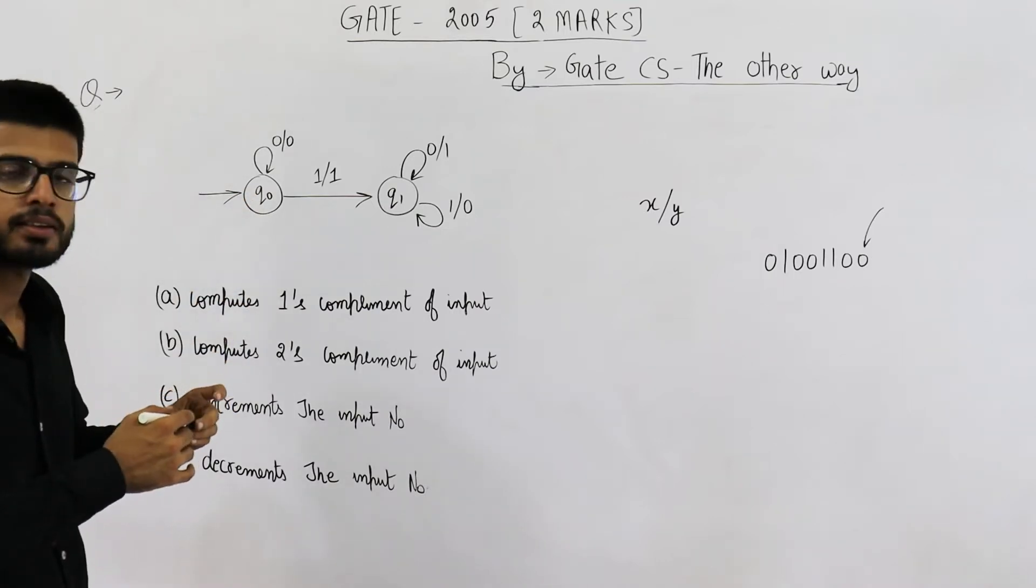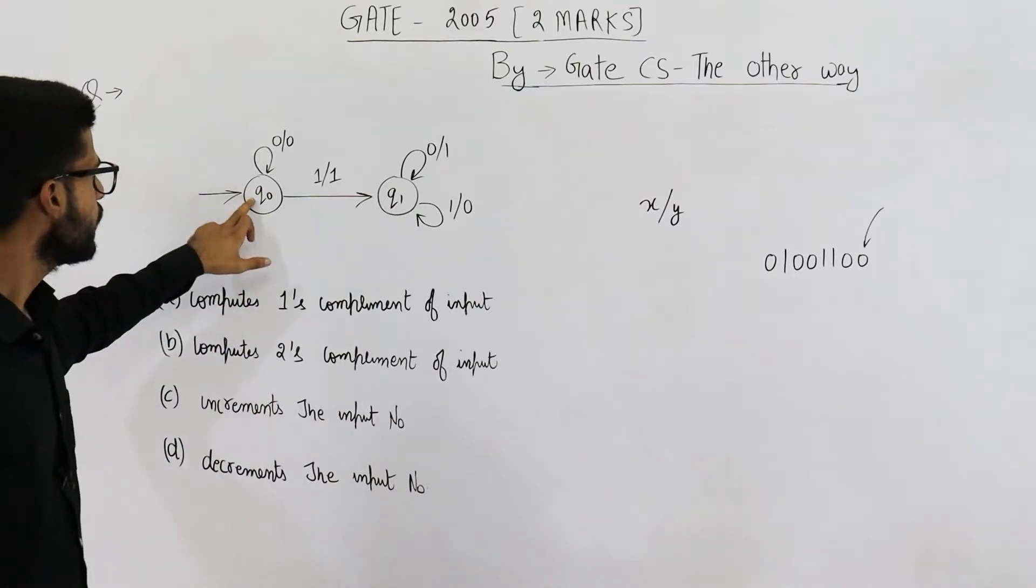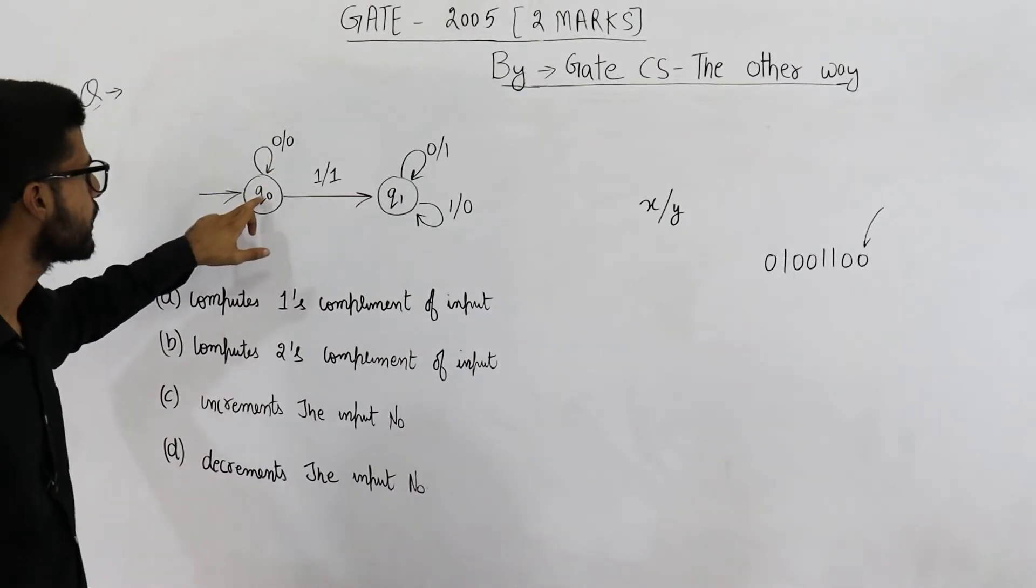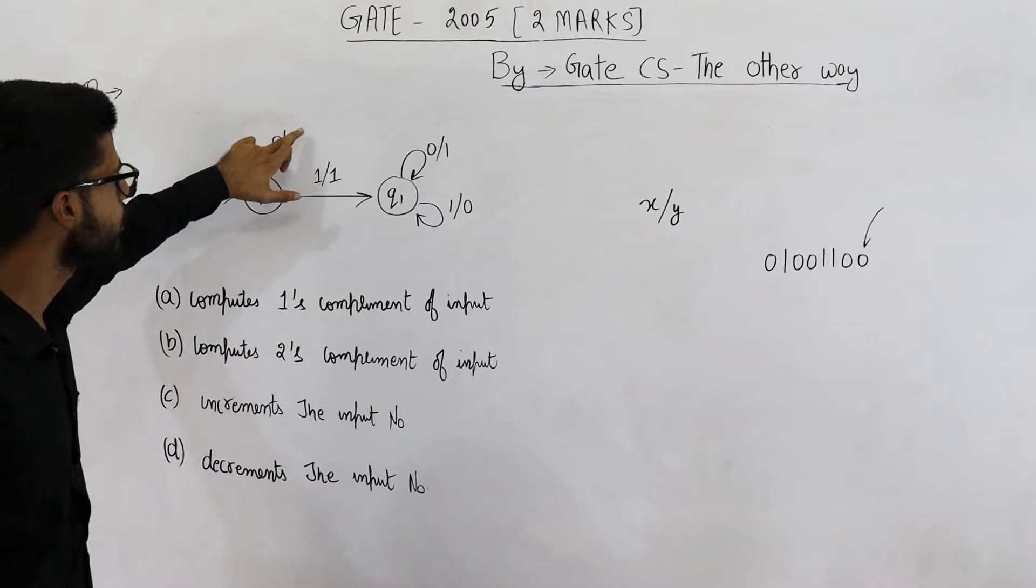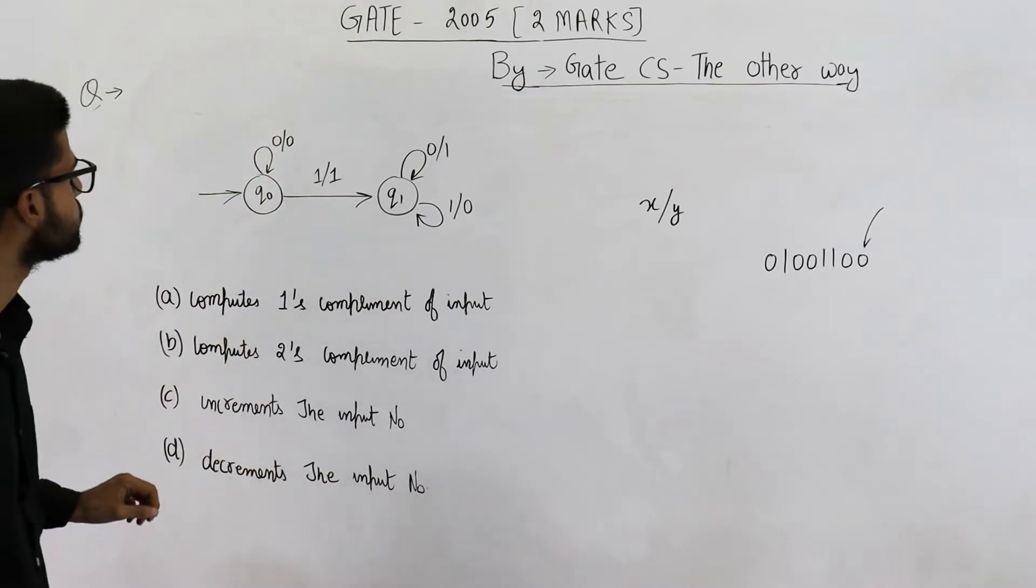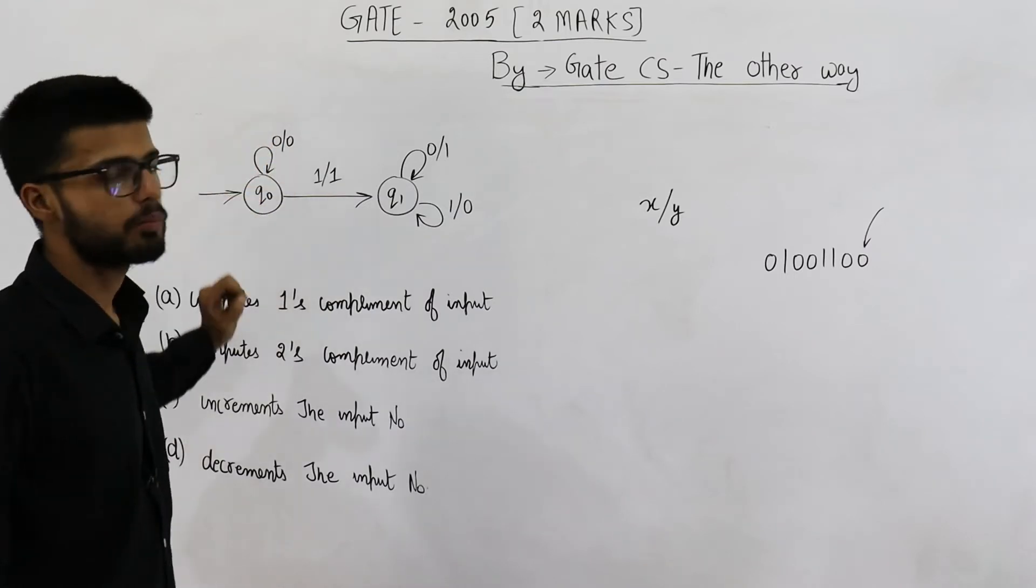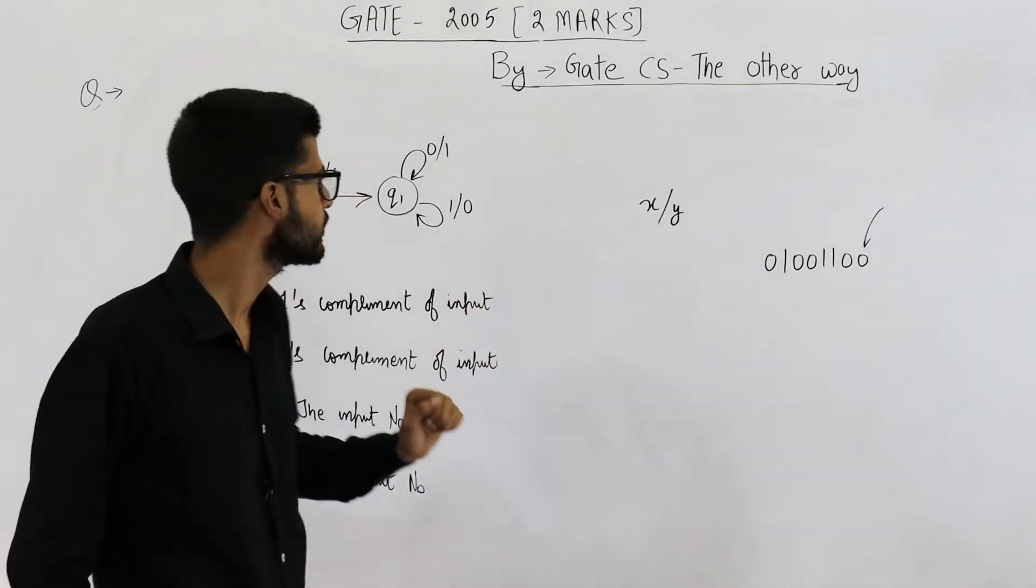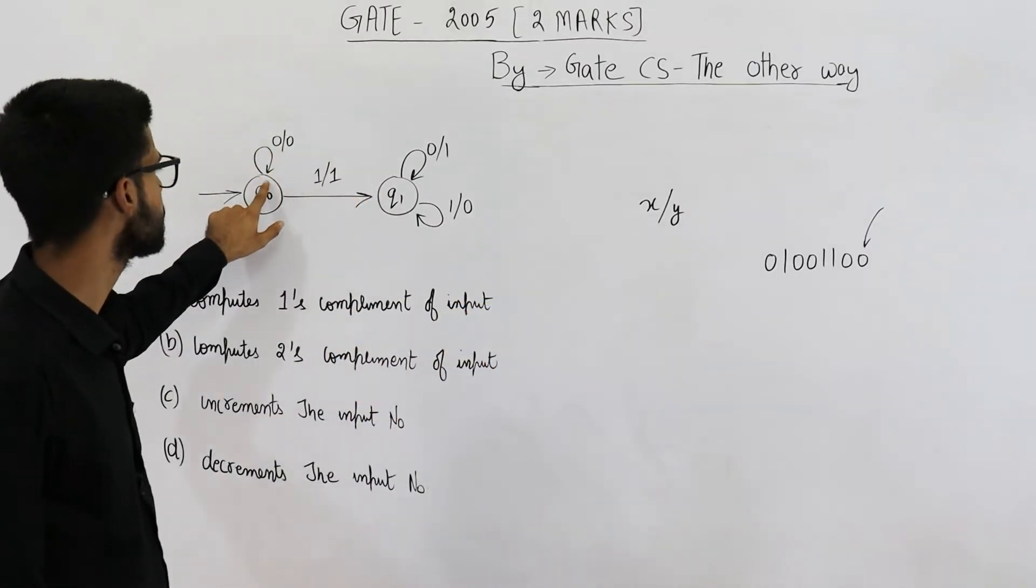Initially you will be on this state, the state q0. If you see a 0 on this state, you will let this 0 be as it is. That means for input 0, we will output 0 and we will still remain on this state only. This can happen for n number of times. That means you can see any number of 0s. You will just keep them as it is and stay here only.